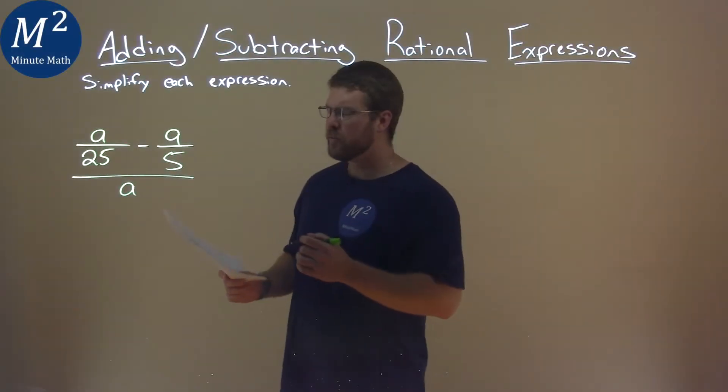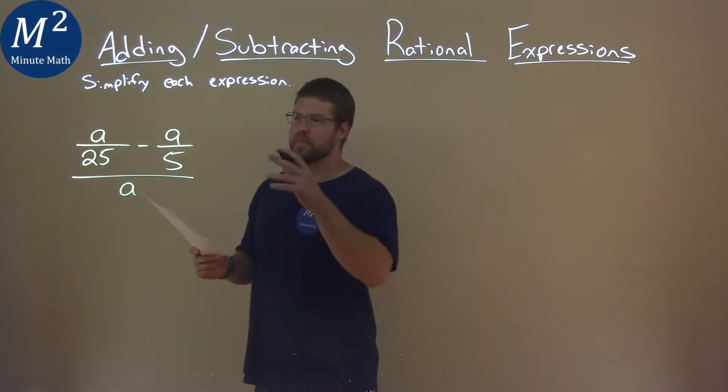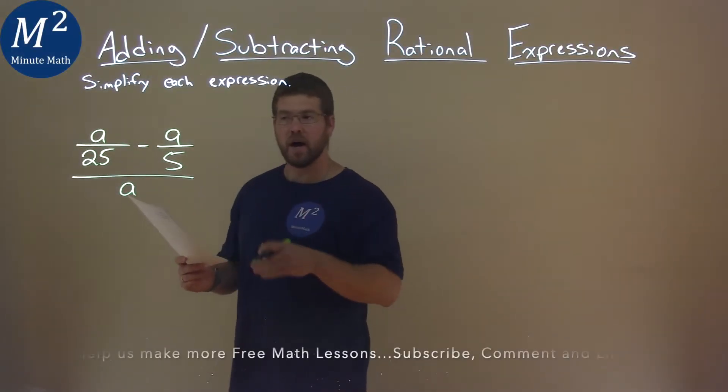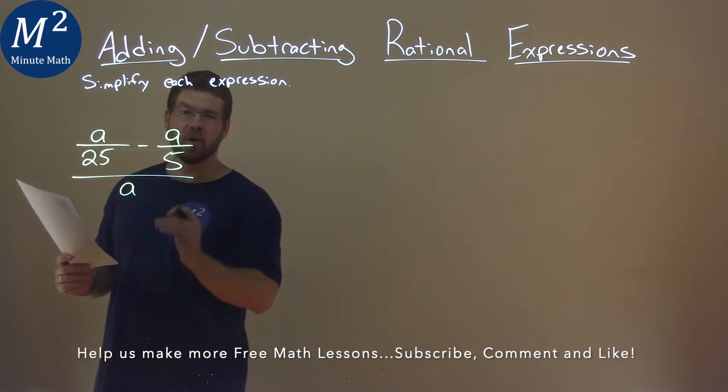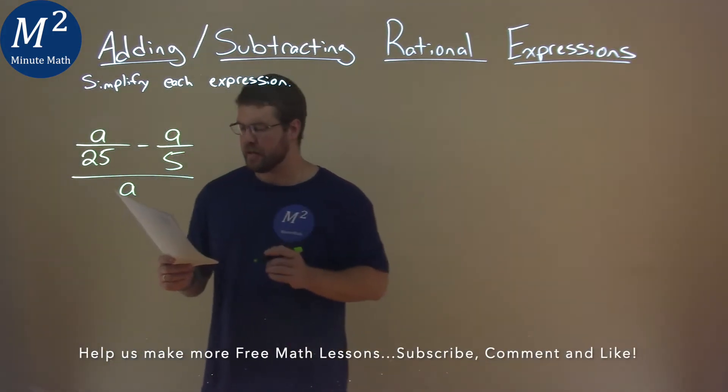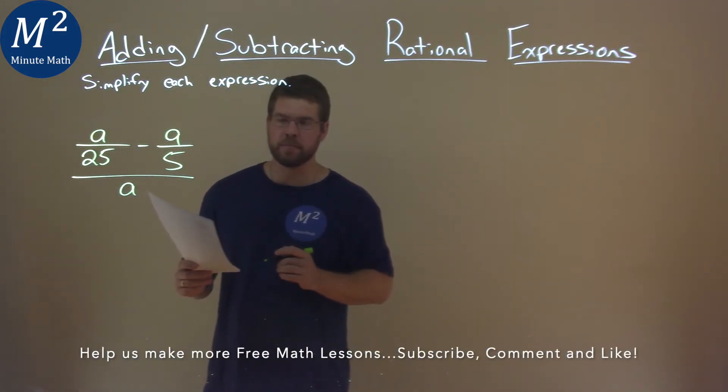We're given this problem right here: a over 25 minus a over 5, all over a, and we've got to simplify this expression.